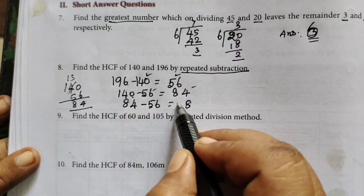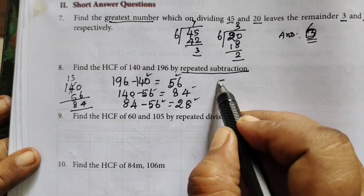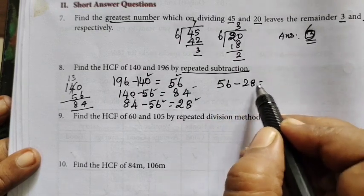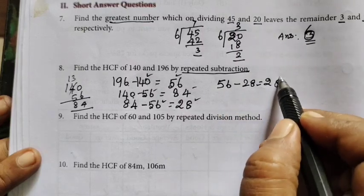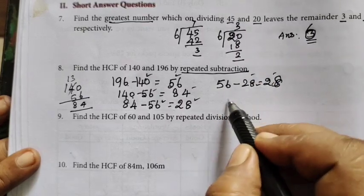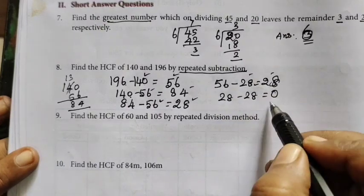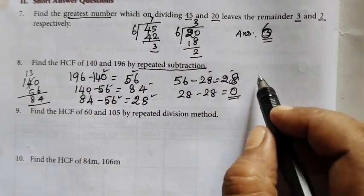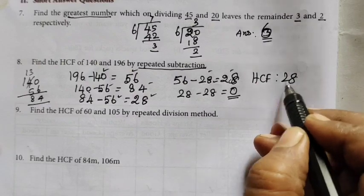So 14 minus 6 is 8, this is 7, 7 minus 5 is 28. This is how you choose this, so 56 minus 28, 16 minus 88, 4 minus 2 is 2, so 28. Next we choose this, 28 minus 28 is 0. So 0 after this stop, so what is the HCF, HCF equal to 28.